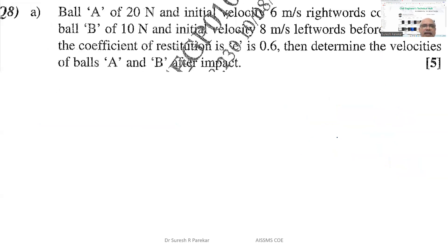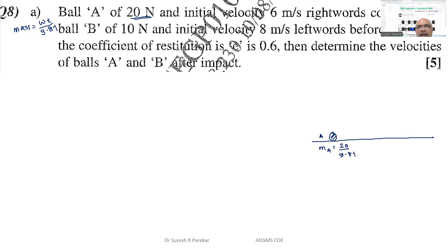Problem 3: Ball A has a weight of 20 N (mass = 20/9.81 kg), moving right at uA = +6 m/s. Ball B has weight 10 N (mass = 10/9.81 kg), moving left at uB = -8 m/s. e = 0.6. Find velocities after impact.